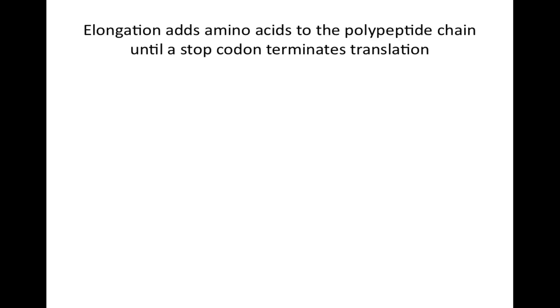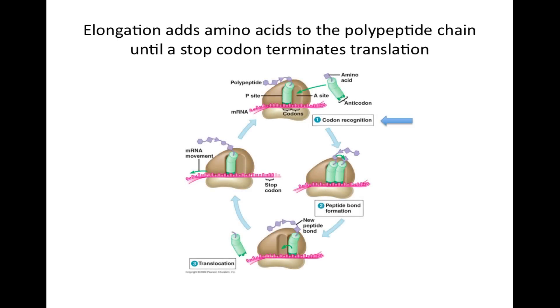Elongation adds amino acids to the polypeptide chain until a stop codon terminates translation. Codon recognition: the anticodon of an incoming tRNA molecule carrying its amino acid pairs with the messenger RNA codon in the A site of the ribosome. Peptide bond formation: the polypeptide separates from the transfer RNA found in the P site and binds to the amino acid on the tRNA found in the A site. Translocation: the tRNA from the A site moves into the P site awaiting the next tRNA which brings the next amino acid.